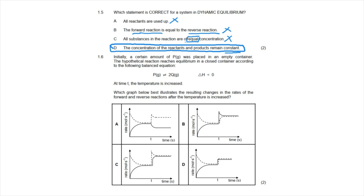Question 1.6: initially a certain amount of P was placed in an empty container. The hypothetical reaction reaches equilibrium in a closed container. The forward reaction has a negative enthalpy change, meaning it is exothermic. At time T the temperature is increased. Which graph best illustrates the resulting changes in the rates of the forward and reverse reactions?